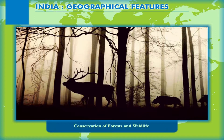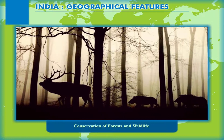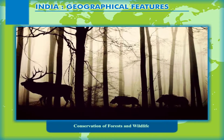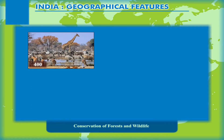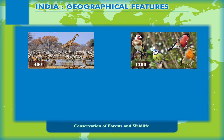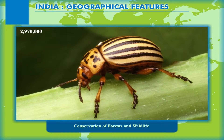Conservation of Forests and Wildlife. Fauna refers to the animal kingdom or the wildlife and other species. Like the variety of flora, the fauna is also found in abundance spreading all over the country. As per an estimate, there are about 400 species of mammals, 1,200 species of birds, 350 species of reptiles, and more than 2,97,000 species of insects found in the Indian subcontinent.